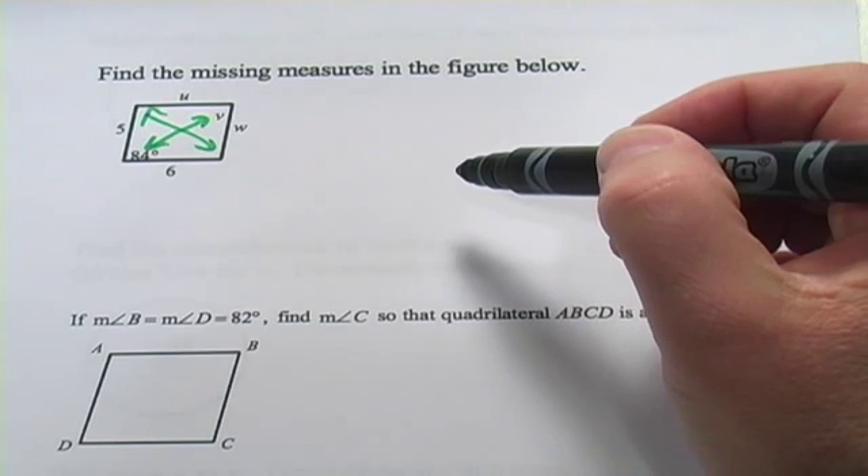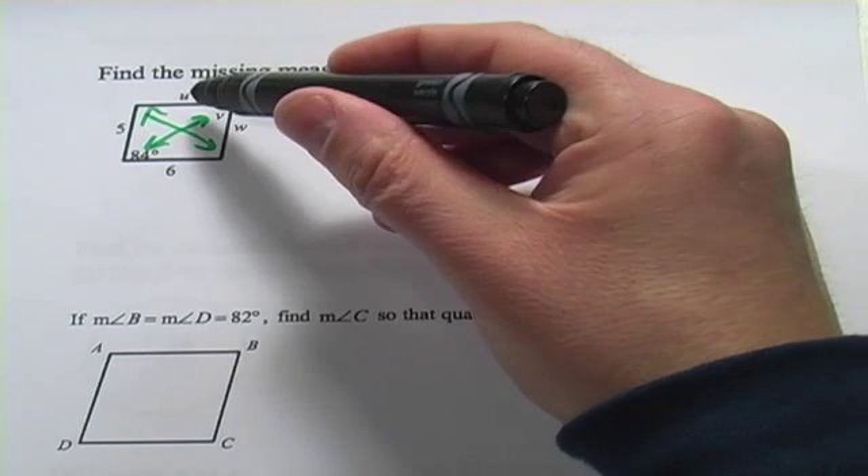In this first problem it says find the missing measures in the figure. Well U, that's the top, it's going to measure the same as the bottom. So U equals 6. W, that's one of the sides, it's going to measure the same as the other side. So W equals 5. And V is the angle opposite of the 84 degree angle. So V is also going to be 84 degrees.